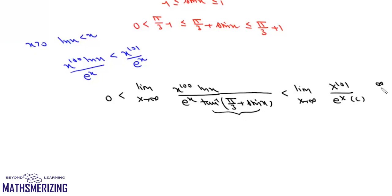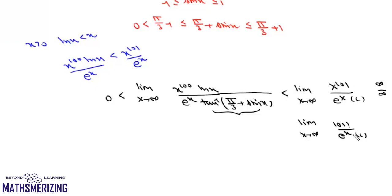This upper bound is of the form infinity upon infinity. Applying L'Hôpital's rule and differentiating 101 times, we get the limit as x tends to infinity of factorial 101 upon e to the power x times c. Since factorial 101 upon infinity is 0, this limit equals 0.